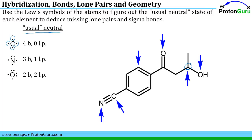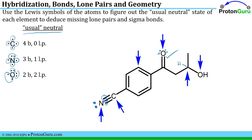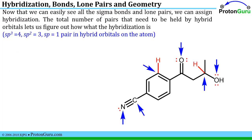A carbon should make four bonds and have no lone pairs, so where only three bonds are drawn, we know there should be another hydrogen there. A neutral nitrogen should make three bonds and also have a lone pair, which is not drawn in this structure. Oxygen should make two bonds and have two lone pairs — we have two bonds, but we're missing those lone pairs. Same situation with the other oxygen: it has a bond to a hydrogen and a bond to a carbon, but the two lone pairs are missing.